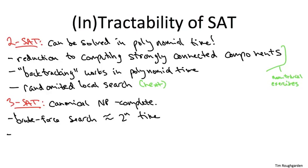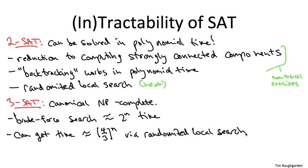Remarkably, randomized local search lets you improve dramatically over the running time of naive brute force search. Rather than a running time of roughly 2 to the n, a very clever twist on the 2SAT algorithm that we're about to discuss runs in polynomial time. A twist on that for 3SAT runs in time roughly 4 thirds raised to the n. Way better than 2 to the n.